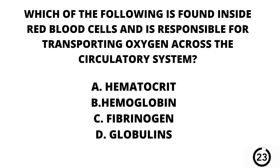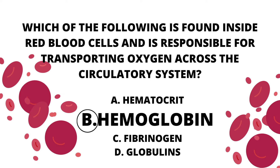Question number thirteen. Which of the following is found inside red blood cells and is responsible for transporting oxygen across the circulatory system? A. Hematocrit. B. Hemoglobin. C. Fibrinogen. Or D. Globulins. Our answer here is B. Hemoglobin.